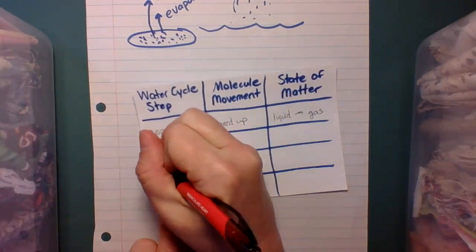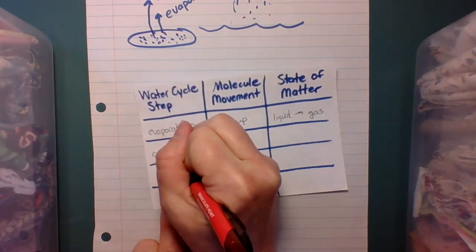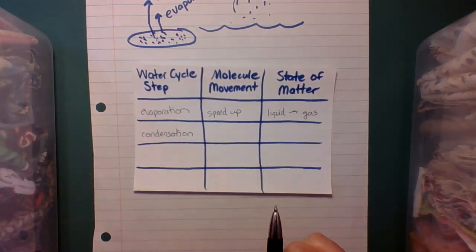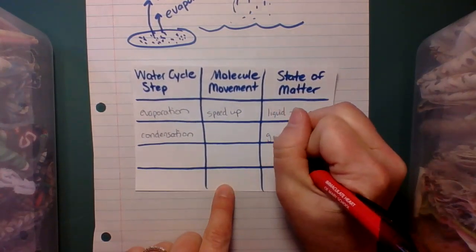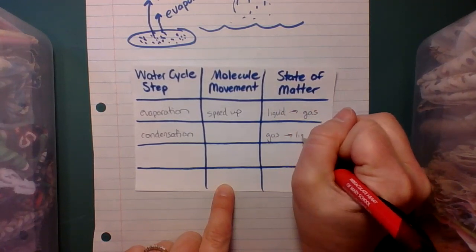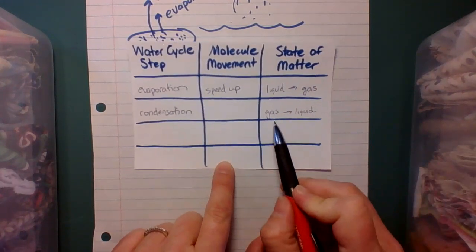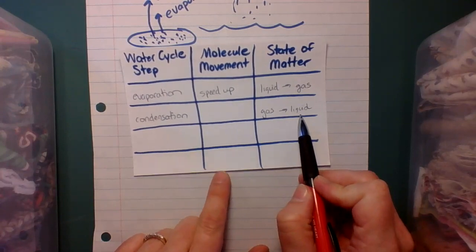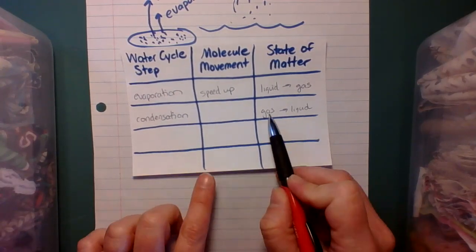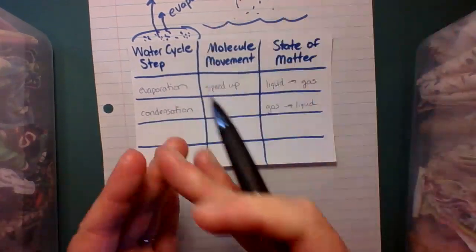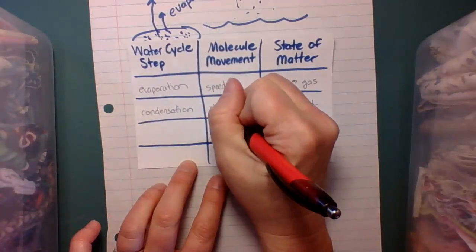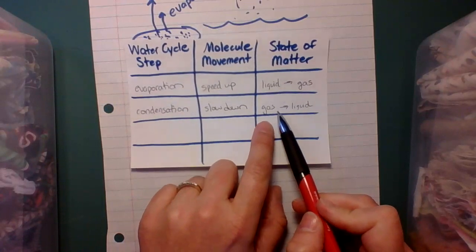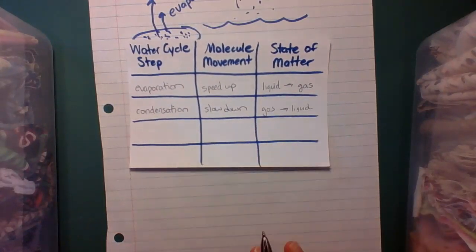So the next step is condensation. And we talked about that, the formation of the clouds. So condensation, it's a gas turning back into a liquid. So we know the gas molecules move the quickest. Liquid, there's more forces, stronger forces holding them together than a gas. That's why they can only slide. So we know they slow down. The speed of the molecules slow down as they turn from a gas to a liquid.